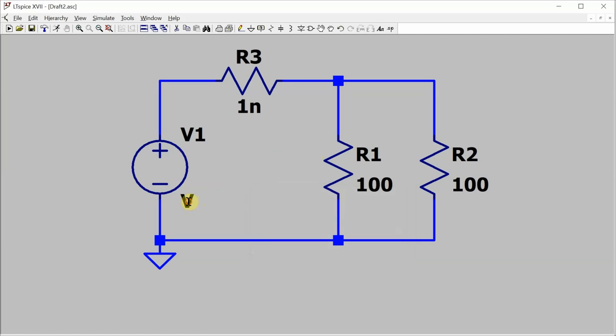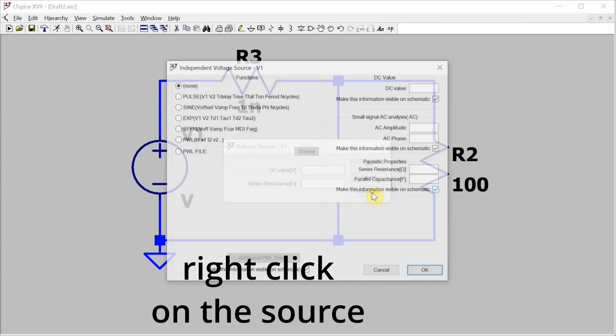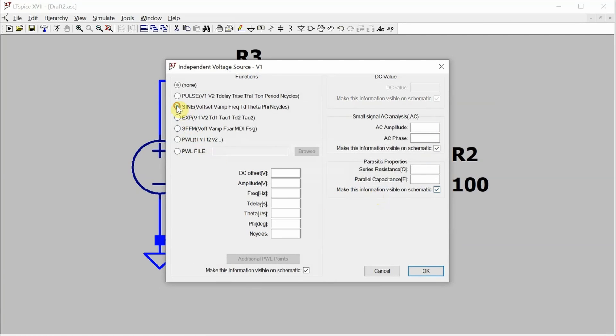Now let's configure the voltage source. I need to click on advanced to get the sine wave. Click on sine wave. I have no DC offset. I have an amplitude of 10 volts. Frequency, I didn't actually specify the frequency. Let's just pick something arbitrary, a thousand hertz. And I don't need to configure those other parameters.